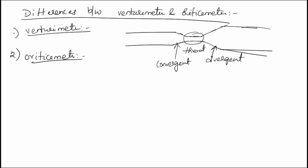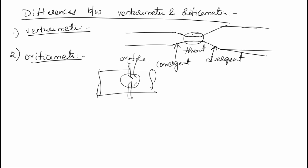An orifice meter is nothing but a flat circular plate inserted into a pipe. The flat circular plate has a hole — that is the orifice — and it is also used to measure the rate of flow or discharge from a pipe or reservoir. The main feature of the orifice meter is that potential energy is converted into kinetic energy, but it does not convert back into potential energy — the fluid is discharged into the atmosphere with kinetic energy only.